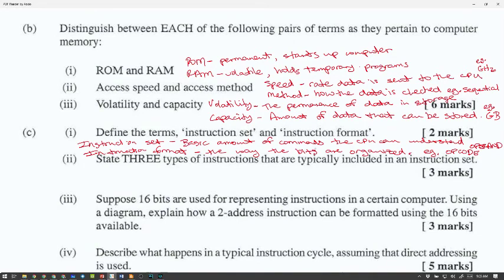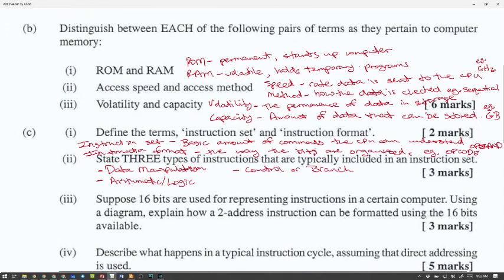State three types of instructions that are typically included in an instruction set. Data manipulation. Arithmetic or logic. Control or branch. Control or branch is for like, you know, jumping from one place to another. Or, usually what we're doing when you do if-then-else is a control or branch because you're choosing different things.